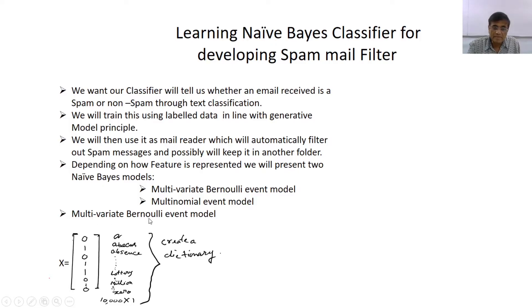In case of multivariate Bernoulli event model, this is my feature vector x. And I have a dictionary: A, Avoca, Xerxes, lottery, million, dollar, all kinds of words are there which constitute my dictionary. And this is my vocabulary. The feature vector is representing, say 10,000 words are there in my vocabulary, right.